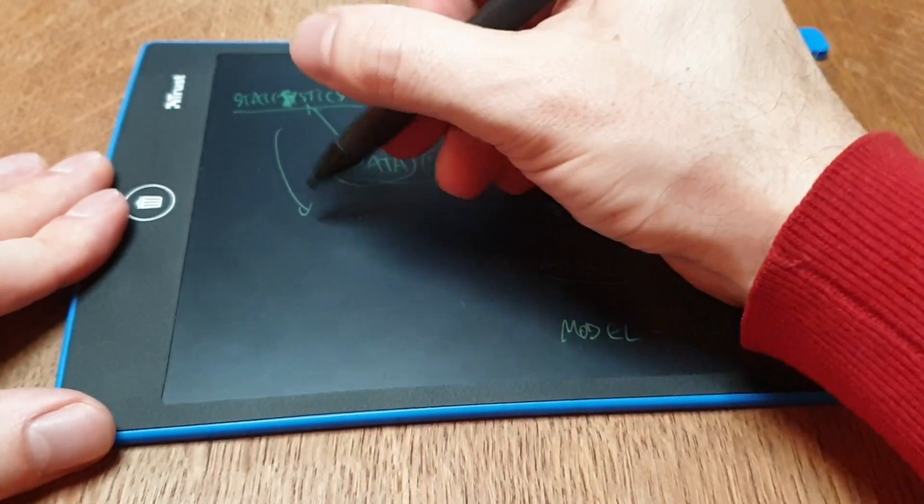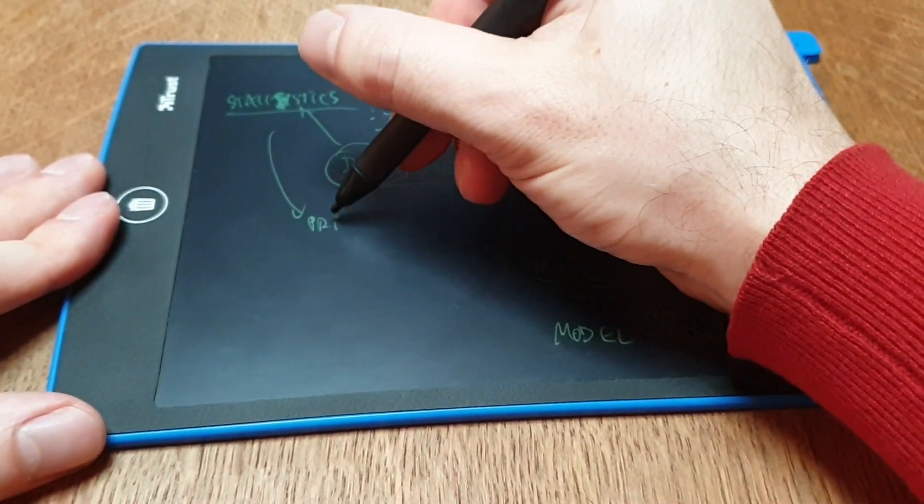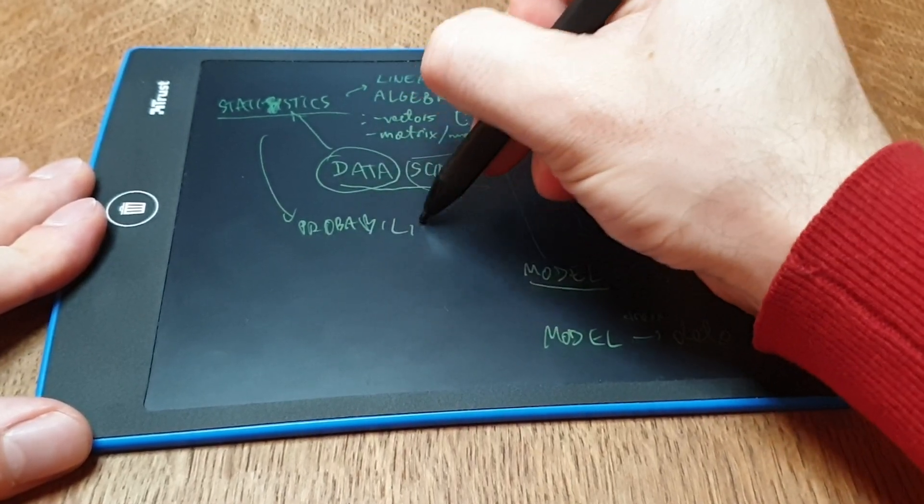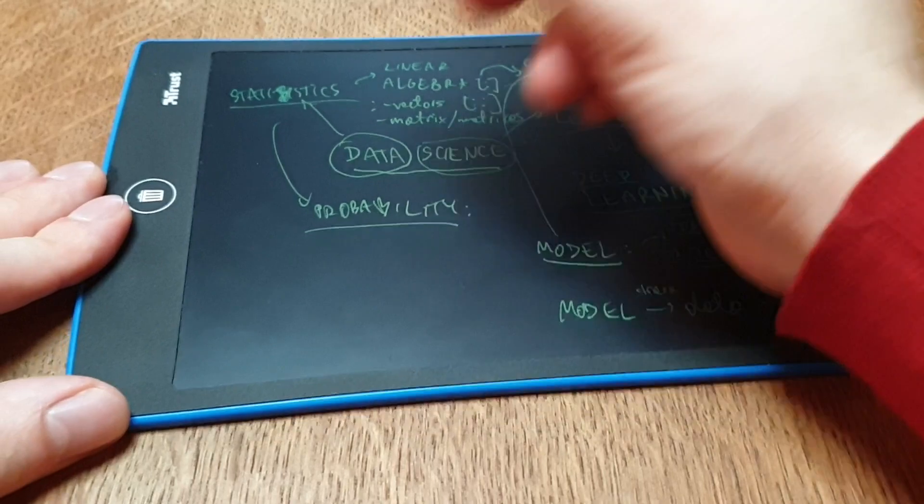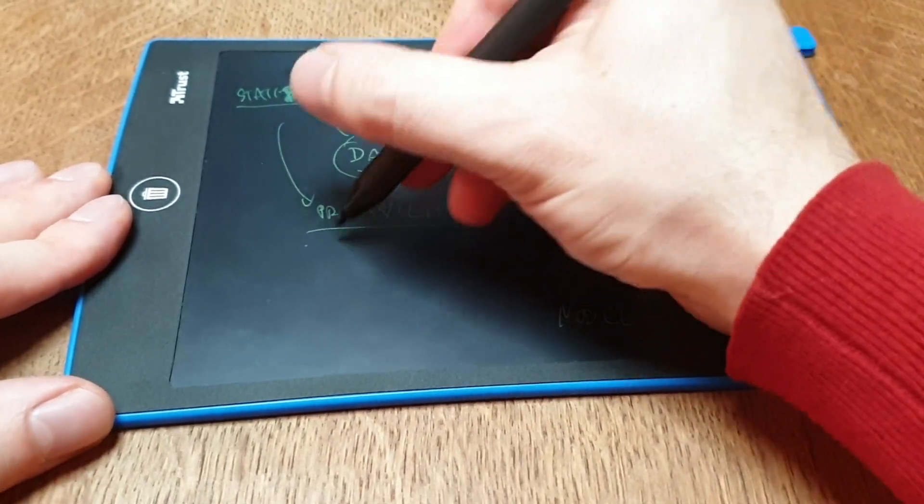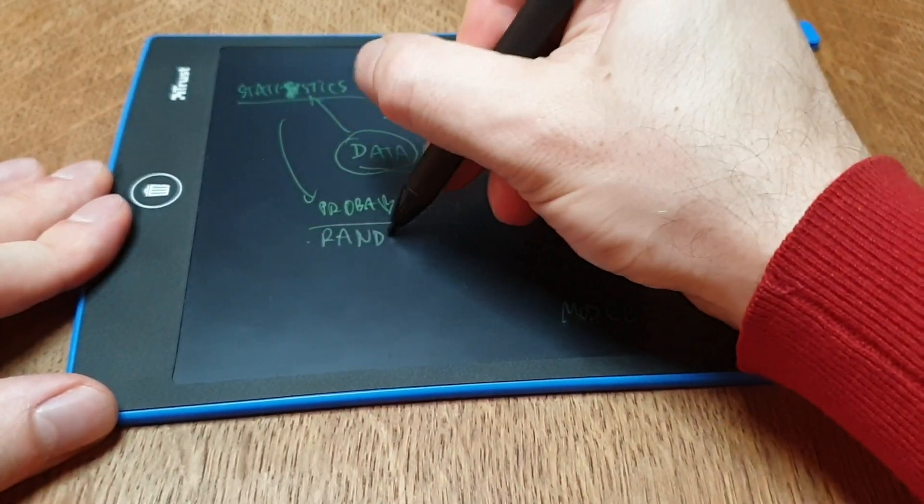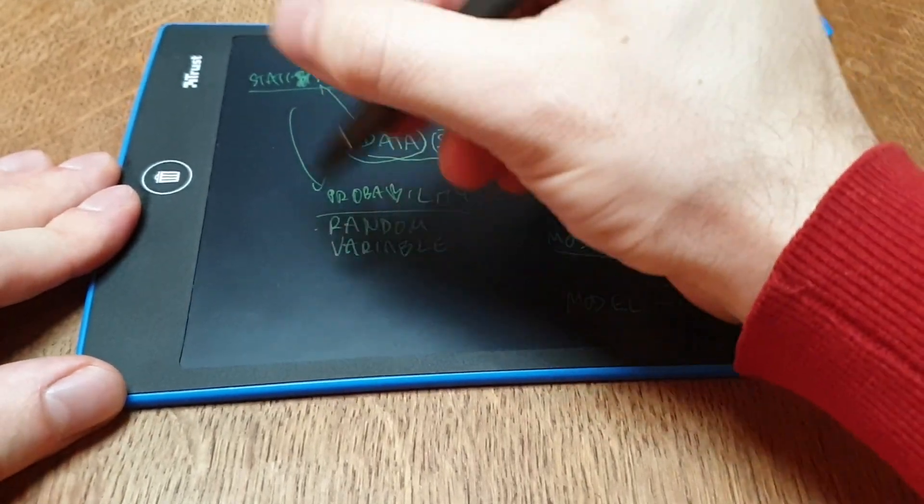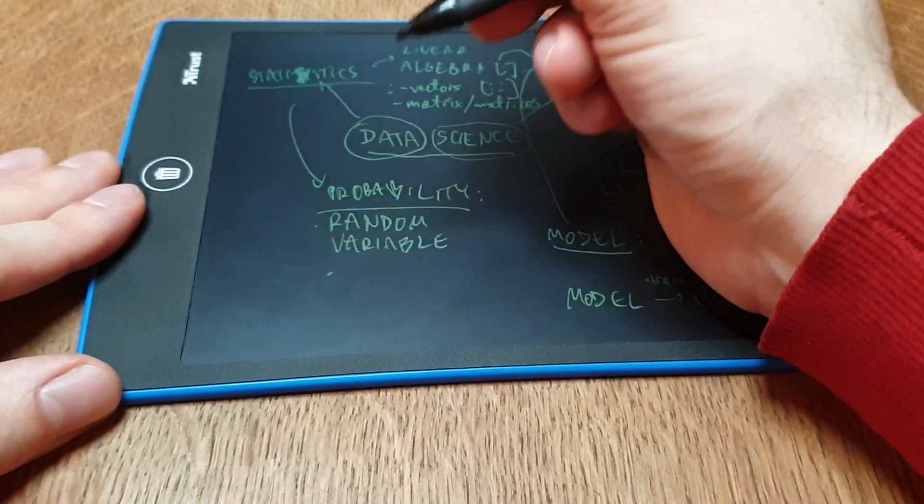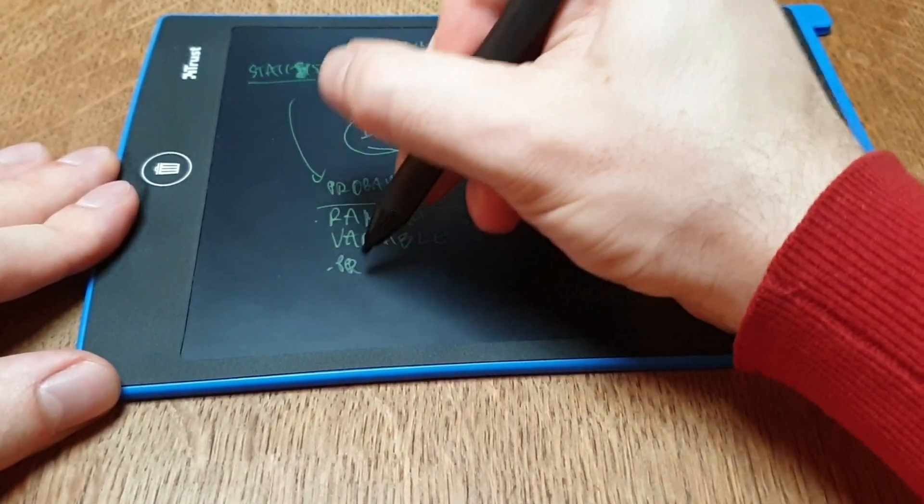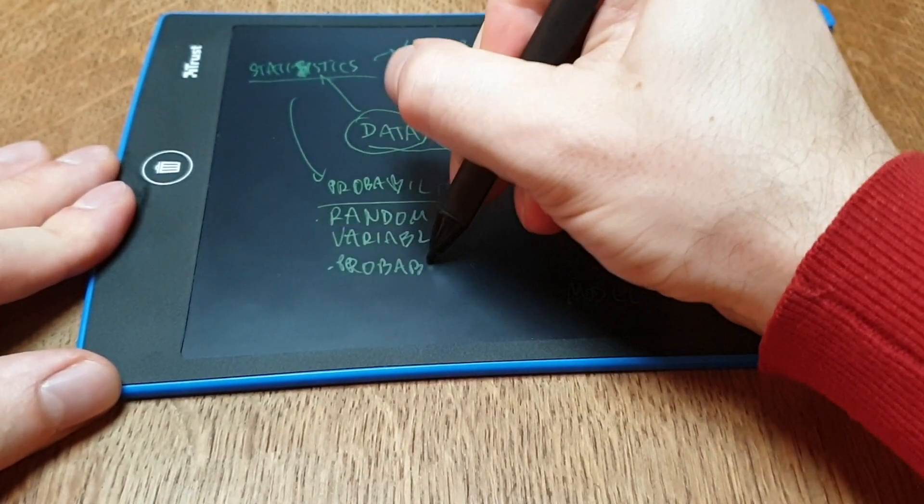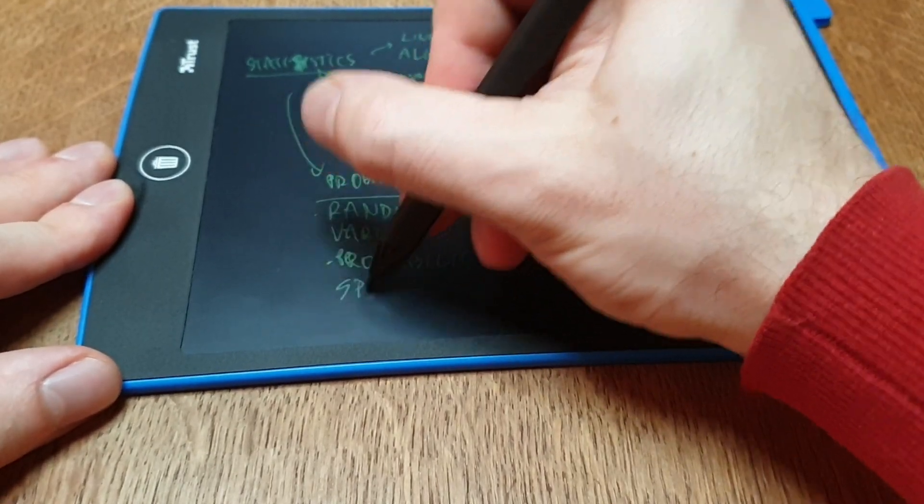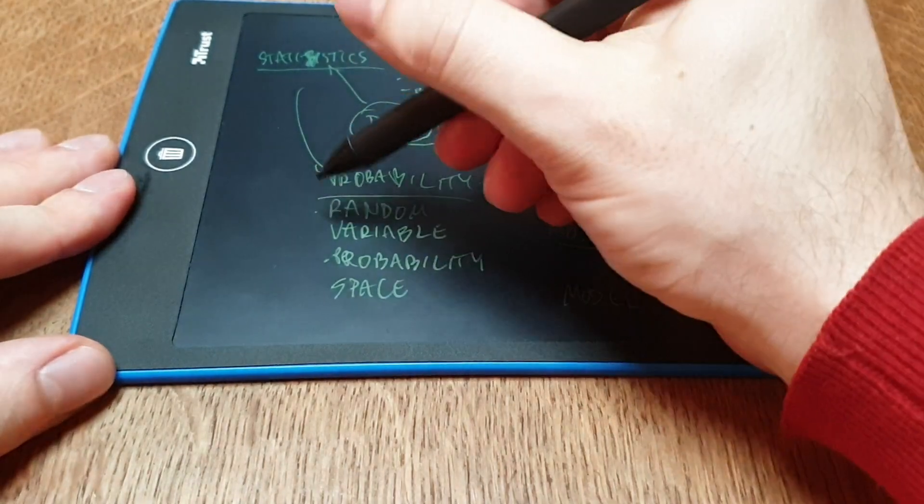On another hand, you also want to know probability. That's at least some basics. So things like random variable, you want to know random variable, and then the probability space. And there are a couple bunch of other terms which are used within that,